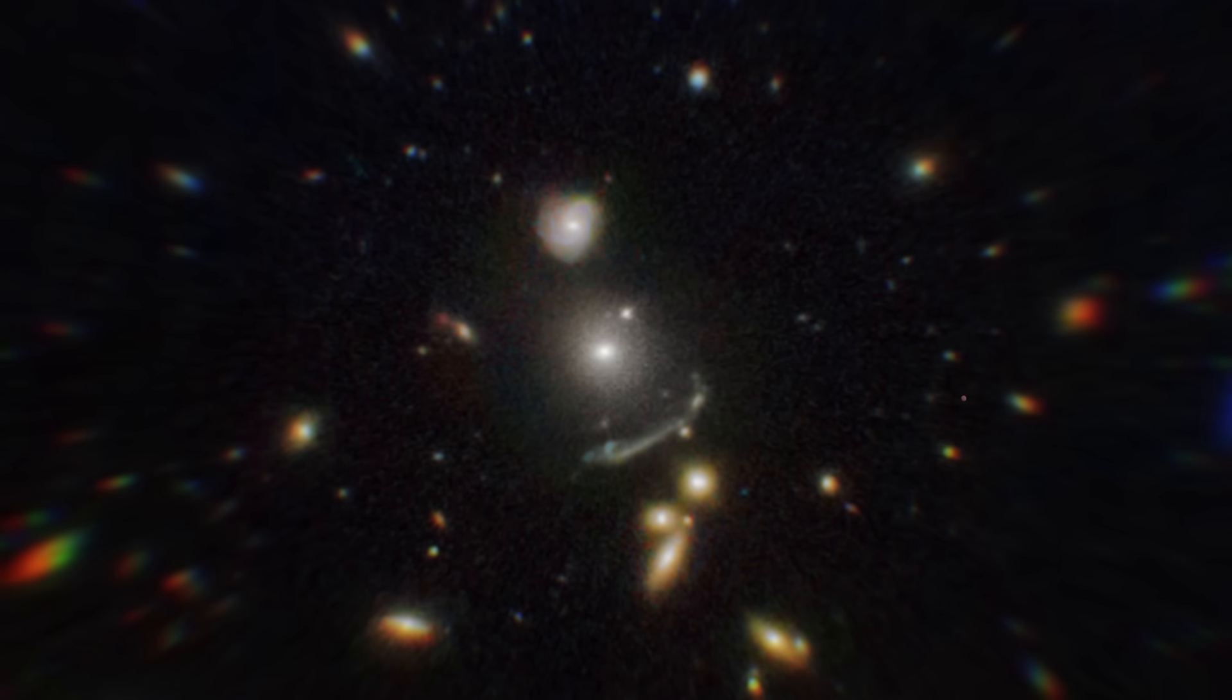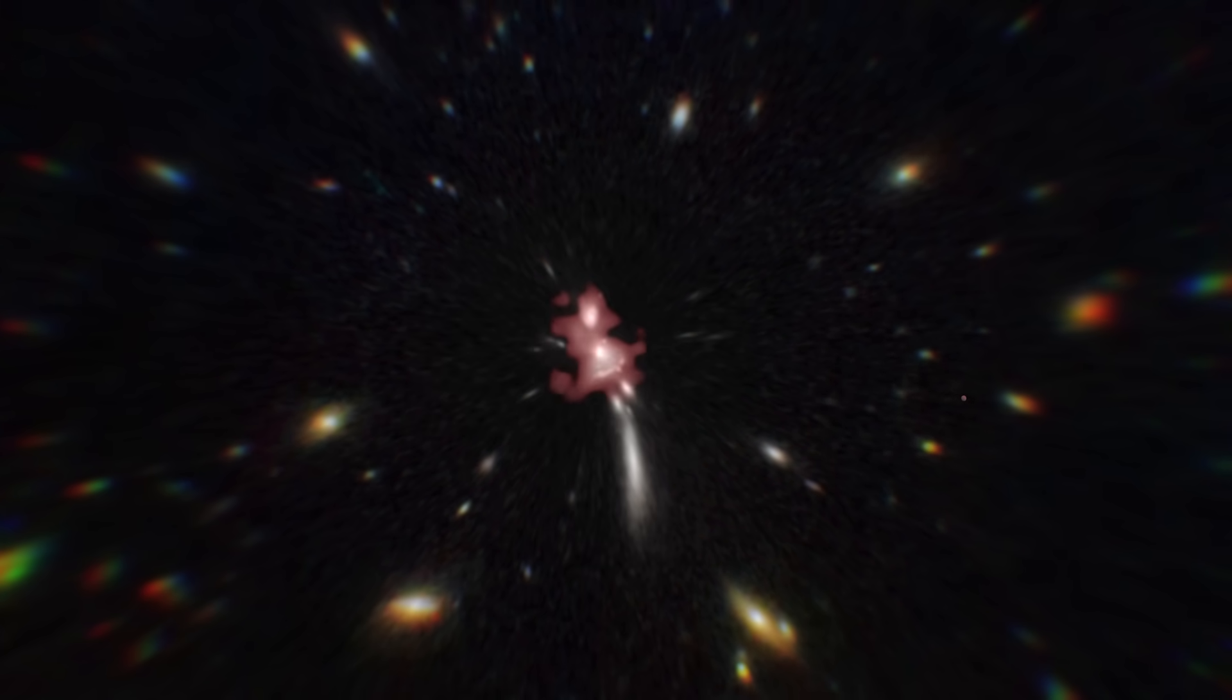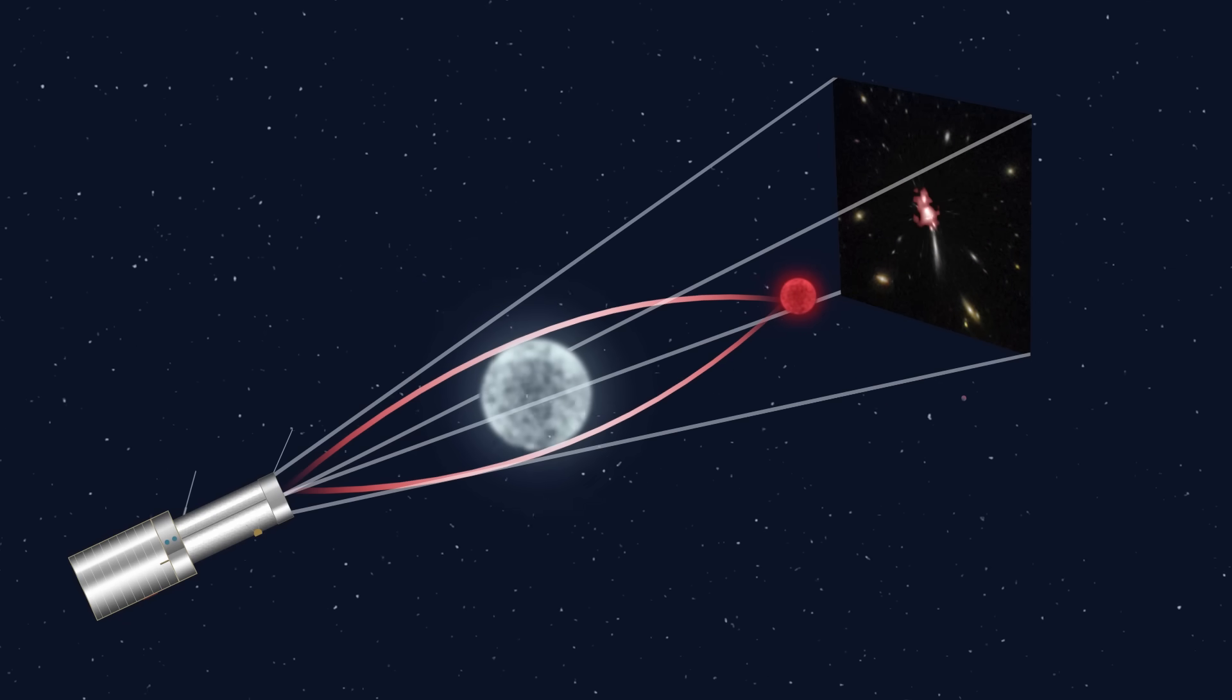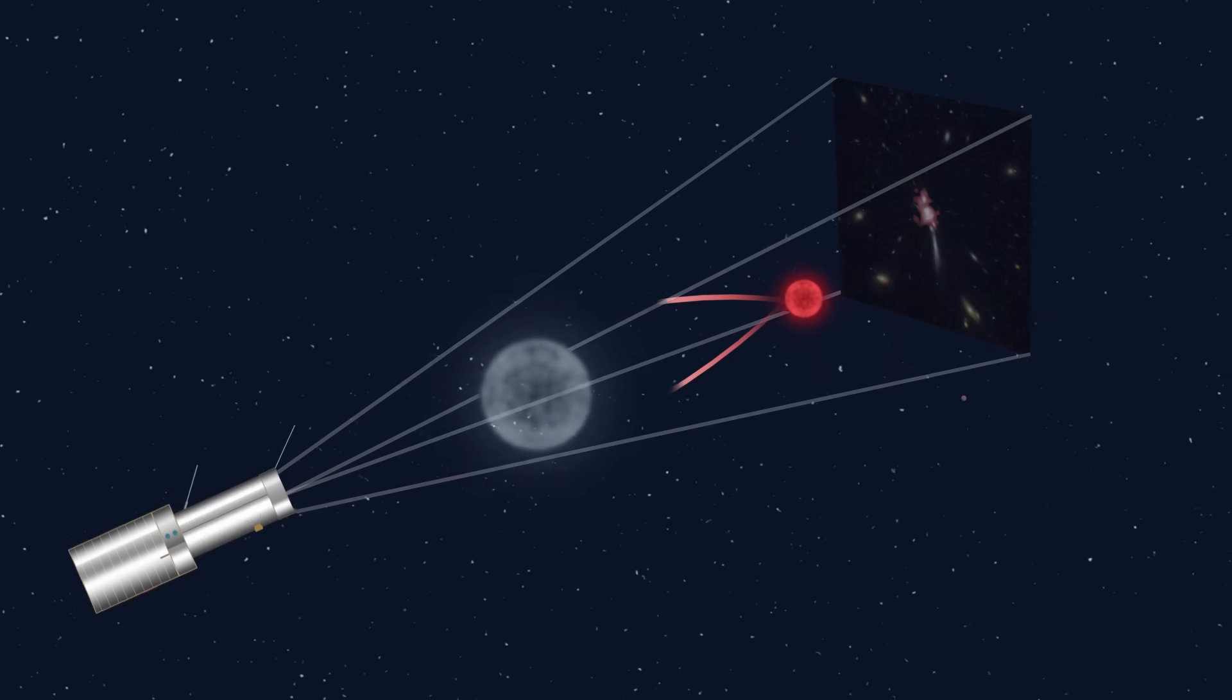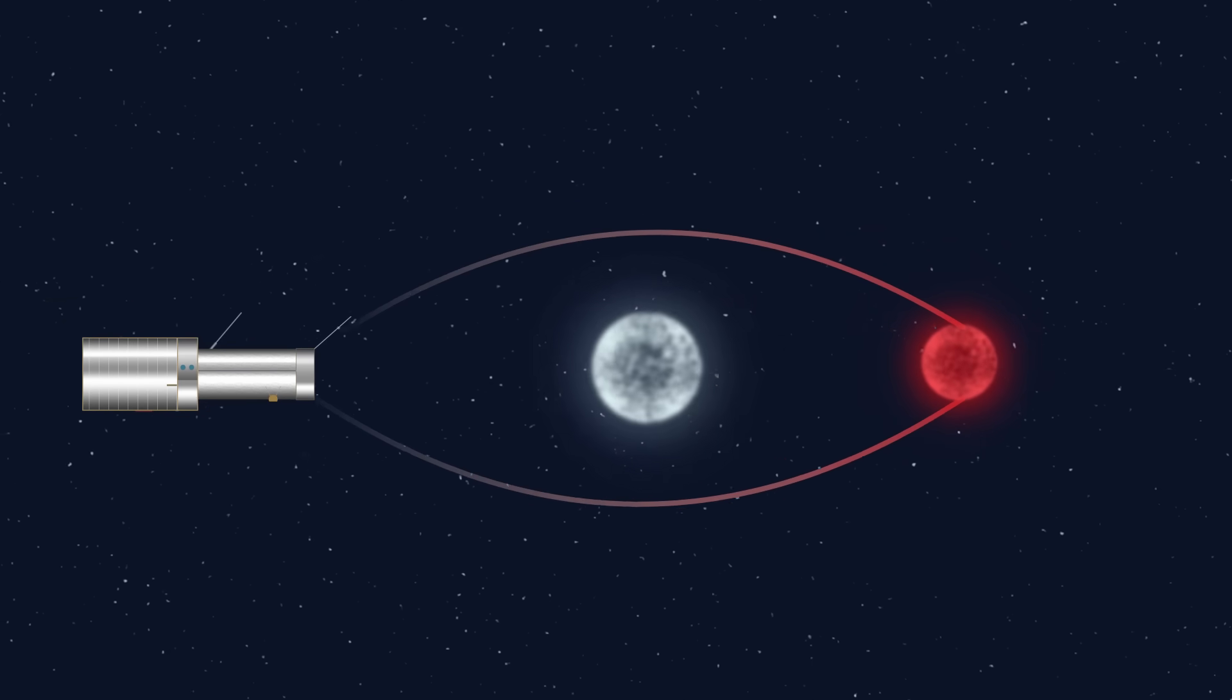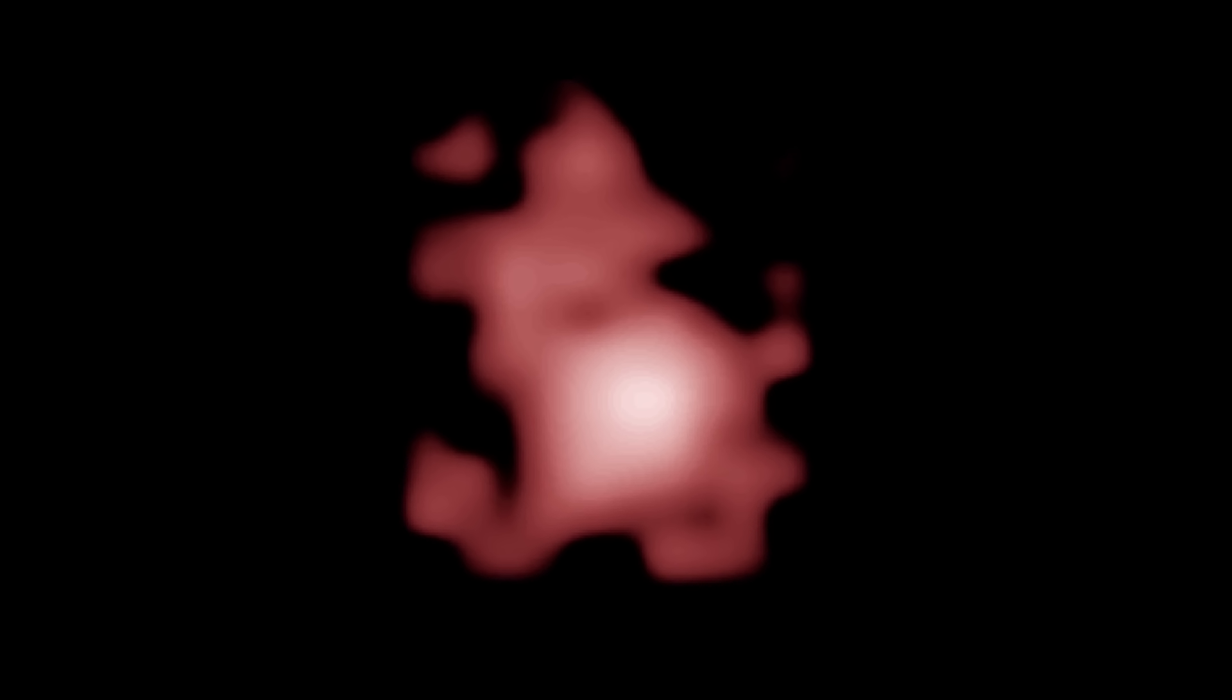The light coming from the galaxy passed by another nearby galaxy, which caused it to be gravitationally lensed. This happens when the light from an object is bent by the gravitational pull of another object. Light that would otherwise miss the observer is bent in a way which directs it toward the observer. This caused the light from galaxy GN-Z11 to be magnified, just enough for Hubble to observe it.